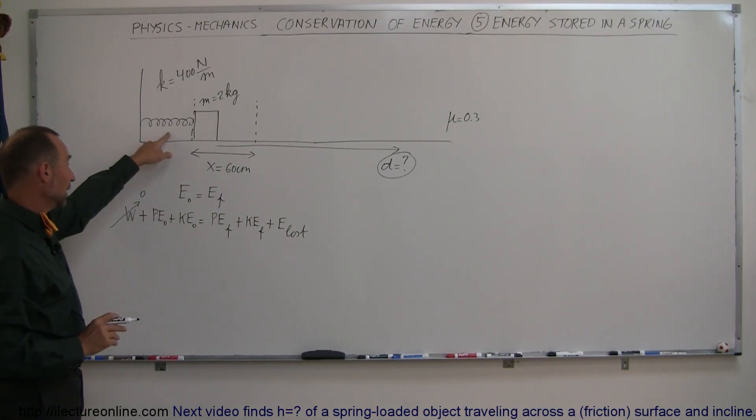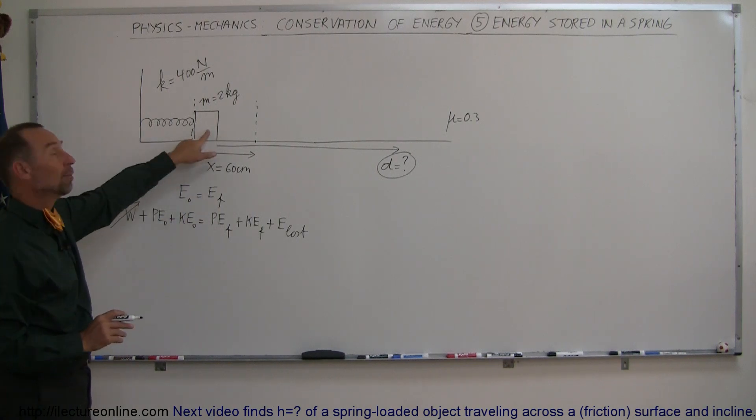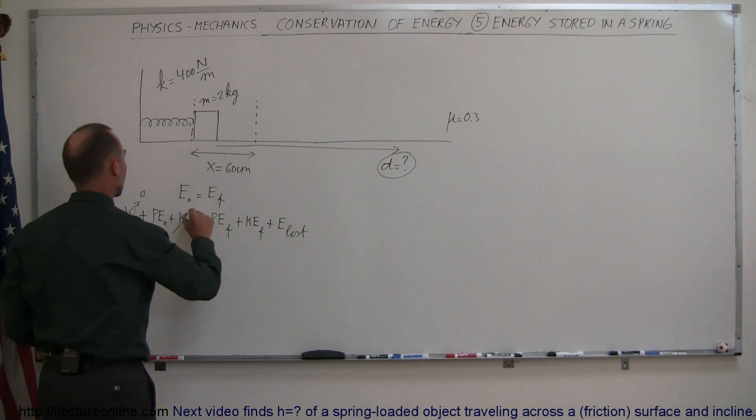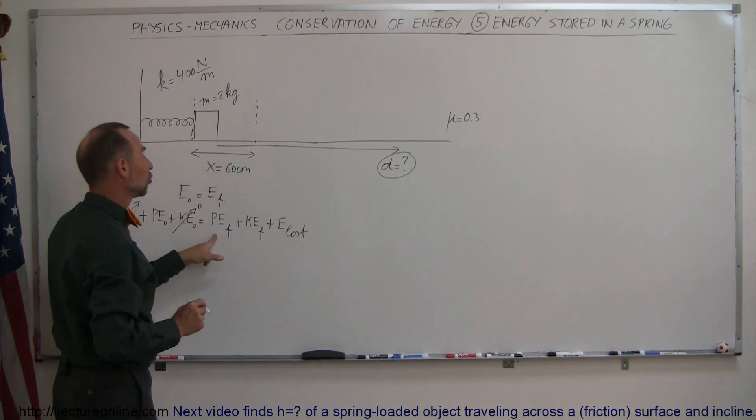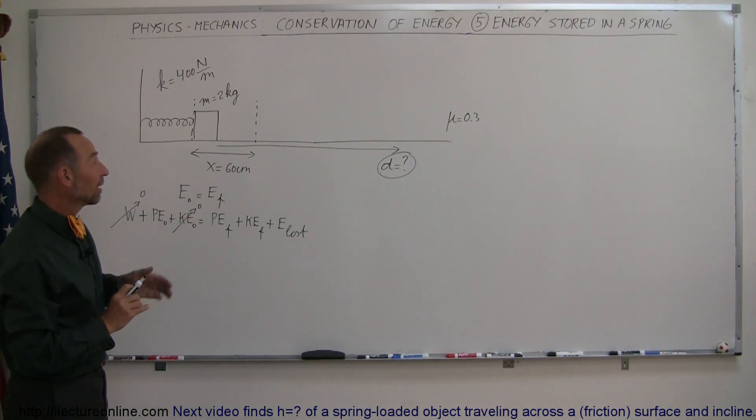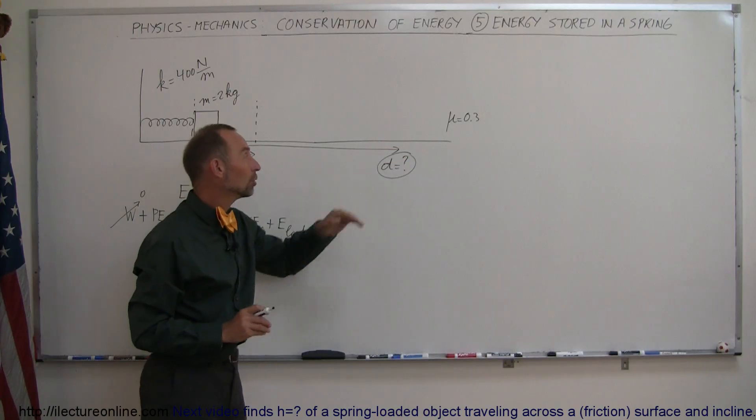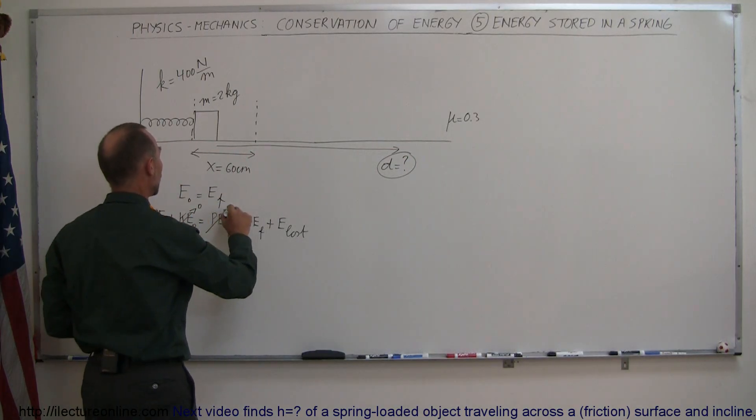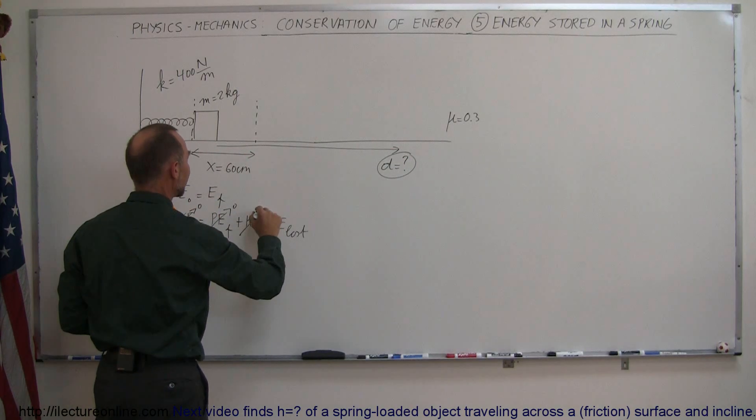Potential energy stored in the spring—yes, we have that. No kinetic energy because nothing is moving at the moment we let go of the block, so zero kinetic energy. There's not going to be any potential energy final because there's no altitude gain, no height gain. The block will not be moving at the end, so that's zero kinetic energy.